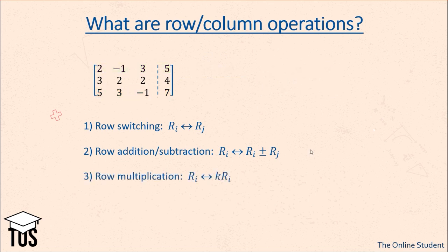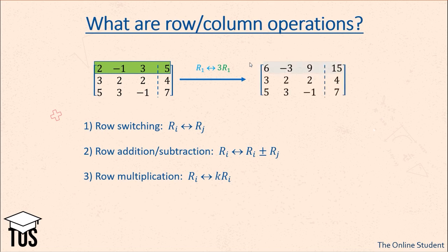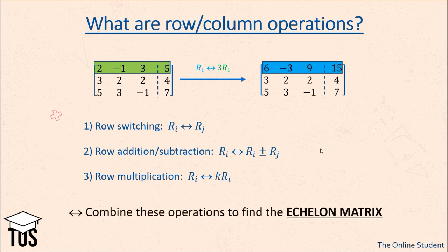Lastly, we have row multiplication — we want a row to become itself multiplied by a constant k. For example, we want the first row to become 3 times that row. So 2 times 3 is 6, minus 1 times 3 is minus 3, and so on. Now we have to combine all these operations to find the echelon matrix.